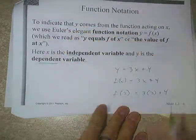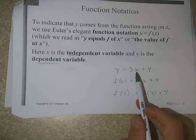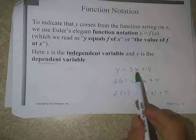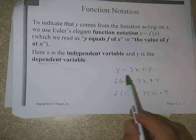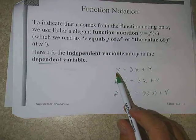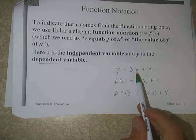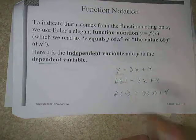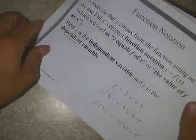A couple of vocabulary words: independent and dependent variables. In this case, x is the independent variable and y would be the dependent variable. The reason is because if y is solved for, y is dependent upon x — whatever we put in for x is going to determine what y equals.